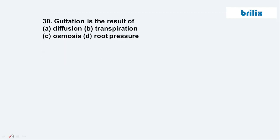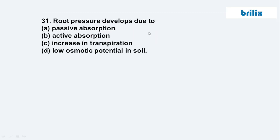Next question: Guttation is the result of root pressure — option D is correct. Question 31: Root pressure develops due to active absorption — option B is correct.